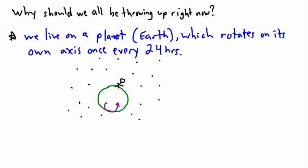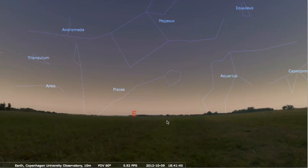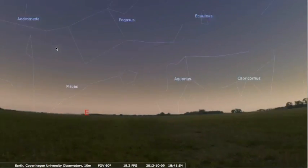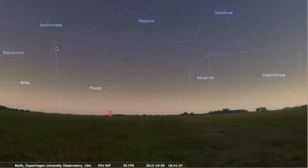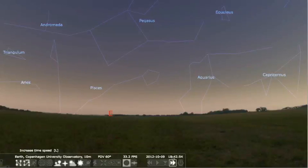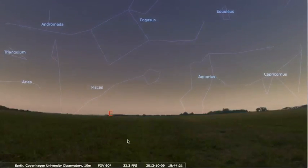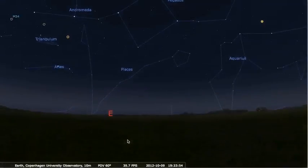To show you this more clearly, I'm going to use a program called Stellarium. This is a free program and I think it's pretty cool. It allows me to simulate what I would actually see. I've got it set to the right place, Copenhagen University Observatory, only 10 meters above sea level. The field of view I'm looking at is 60 degrees. We're going to speed up the time, and you should be able to see some exciting things happening.